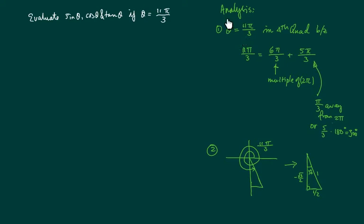Analysis looks something like this. The most important part is really locating this angle. The way you locate which quadrant it's in is to find the closest multiple of 2π, because 2π just goes around the circle.